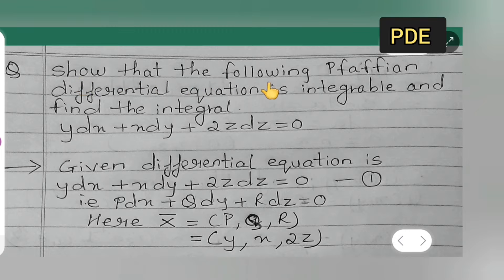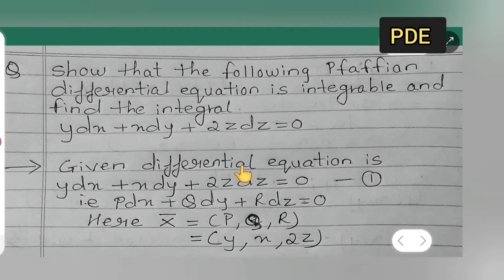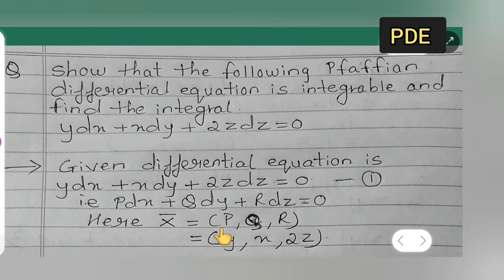We need to show that the following Pfaffian differential equation is integrable and find its integral. The given differential equation is y dx plus x dy plus 2z dz equals 0 — take it as equation 1. This equation is of the form P dx plus Q dy plus R dz equals 0, where the vector X-bar equals (P, Q, R) = (y, x, 2z).